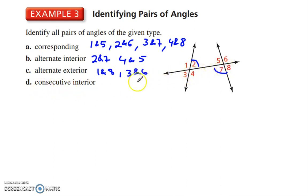Consecutive interior would be 4 and 7. 4 and 7. And 2 and 5. And that's all there is to that.